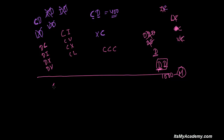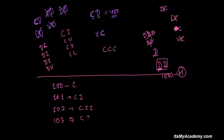For 100 we write C. If I'm writing 101 then I write C I. If writing 102 then I write C II — same process. For 103 I write C III. If writing 105, then I write C V.